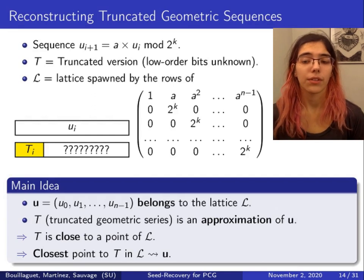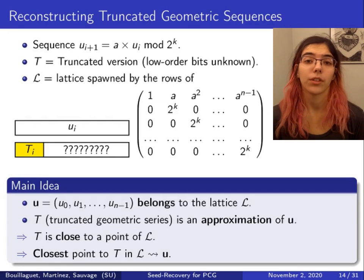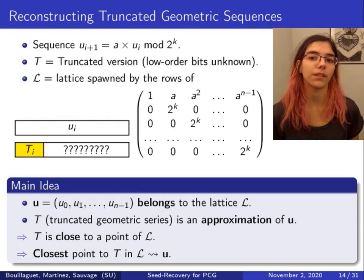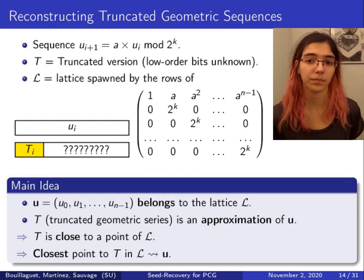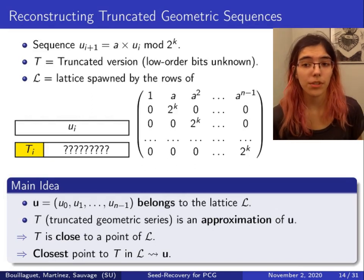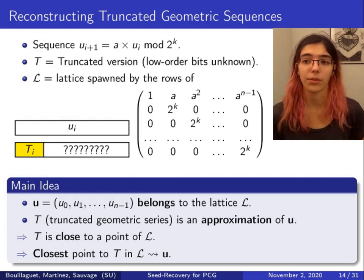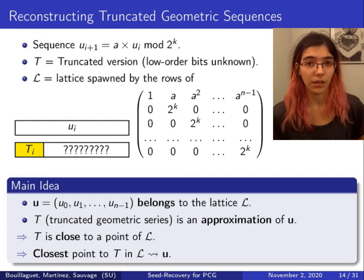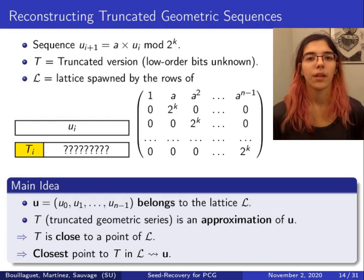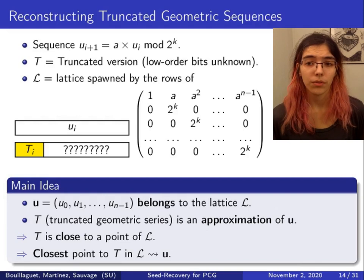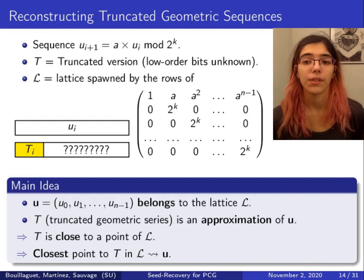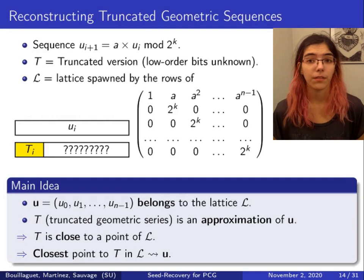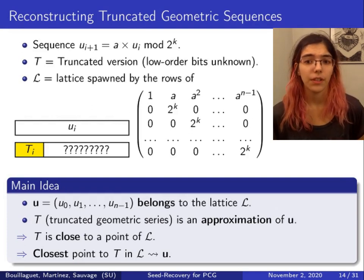All of the n consecutive states of a geometric sequence with a common ratio A form a vector that belongs to this lattice L. T can be seen as an approximation of this geometric sequence we are looking for, in which the least significant bits are unknown. We can recover the missing bits by finding the closest vector to T in this lattice.